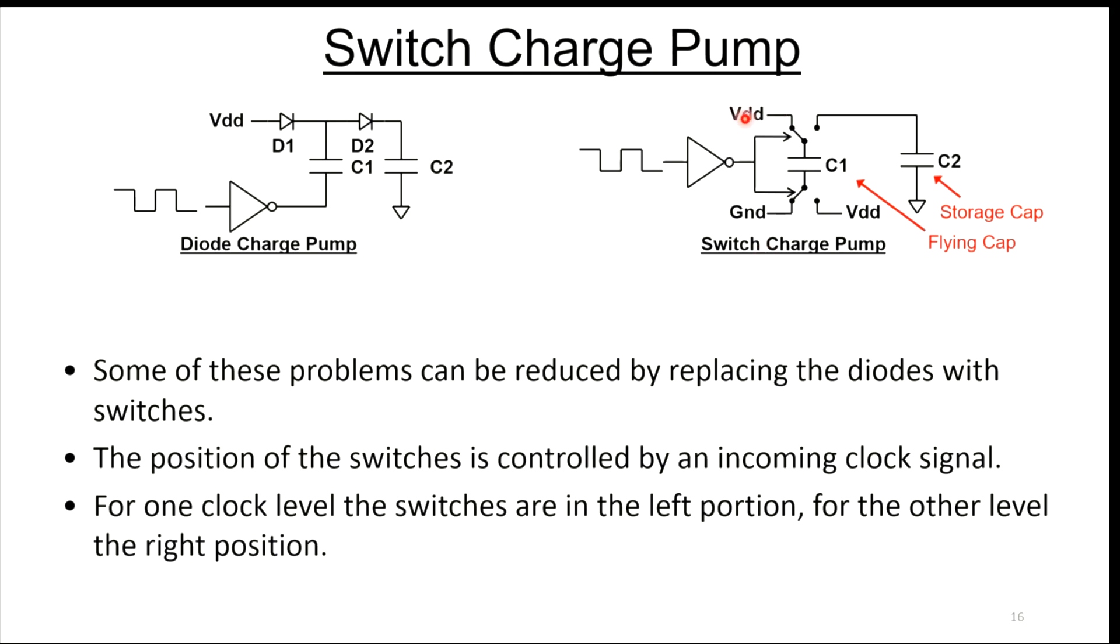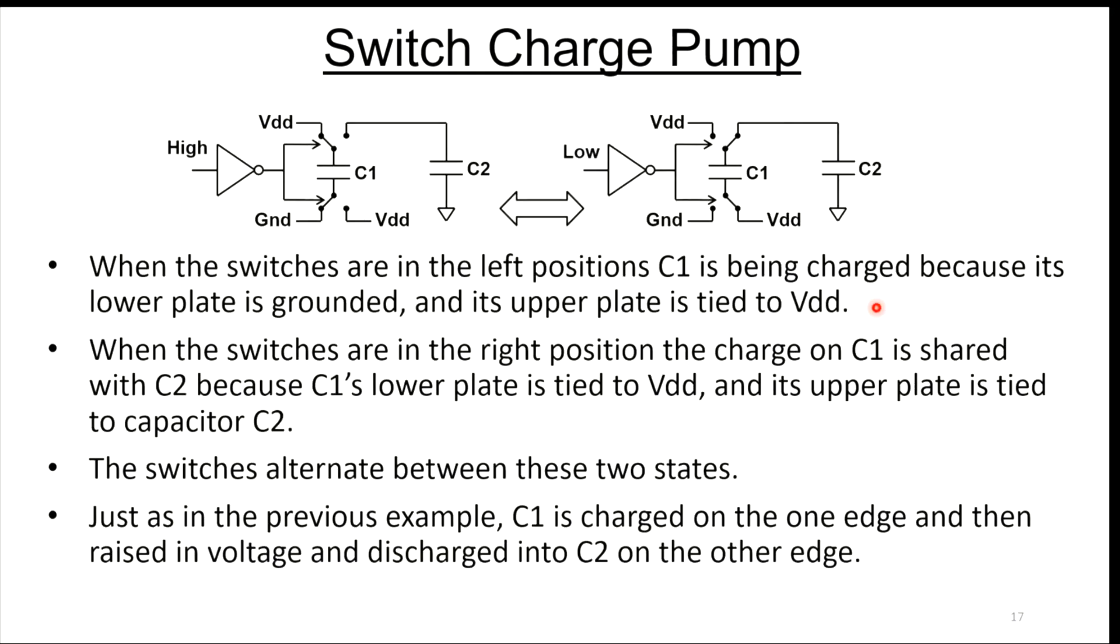A possible solution is to replace these diodes with switches. This works exactly the same way as I showed before. In this case, the position of the switches is controlled by an incoming clock signal. When the clock is high, you'd have the switch position on the left side here. When the clock went low, they would switch to the other side. C1 here is still your flying cap, and C2 is still your storage cap.